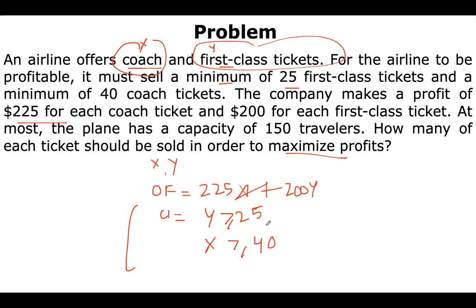Now we'll come to our third constraint equation: the plane has a capacity of 150 travelers. The number of tickets sold would be equal to 150, it can be any number of x or any number of y, but it can't be more than 150. So x plus y would be less than or equal to 150.